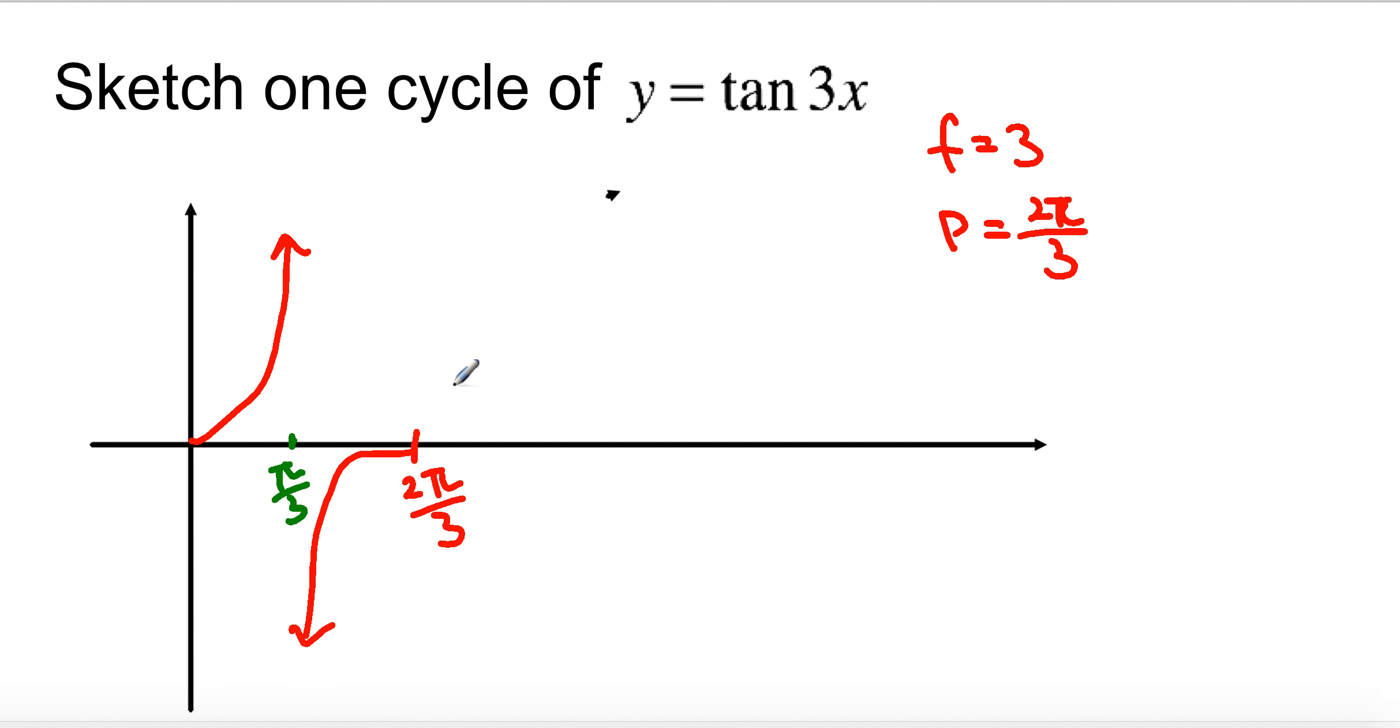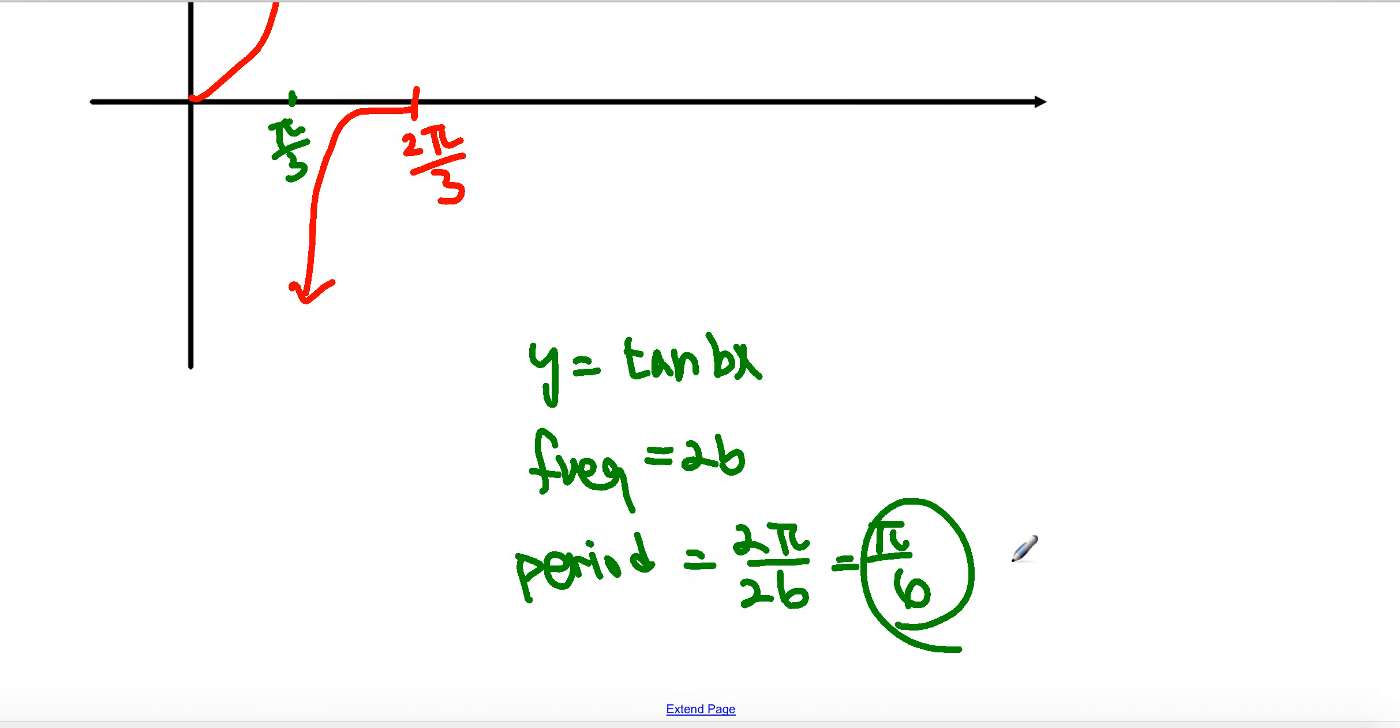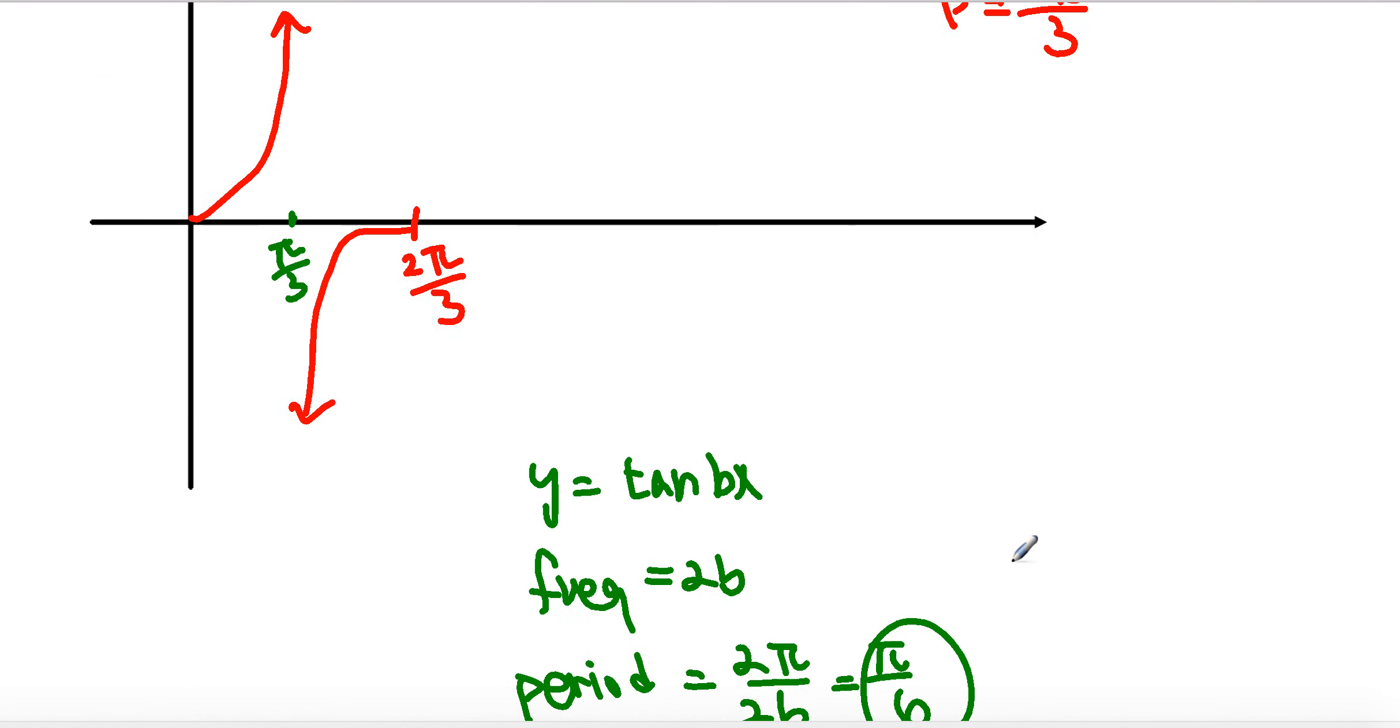Now, so, from here, I guess we can figure out the general case in a way that, if I have y equals tangent of bx, then, in this case, you can see that frequency will be equal to 2b, and period will be 2pi over frequency, which will be equal to pi over b. Alright. We just made a quick summary here.